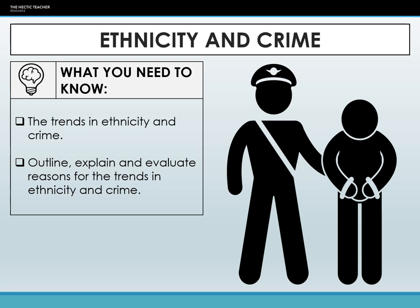In this lecture we're going to be looking at ethnicity and crime. We'll first look at the trends in ethnicity and crime using official statistics data, and then we're going to look at the causes and reasons behind these trends. There are seven causes we're going to look at — this is not an exclusive list; there are more theories you can use from other areas of sociology.